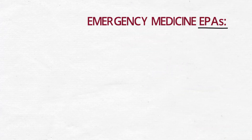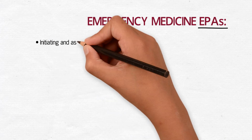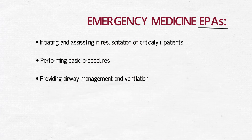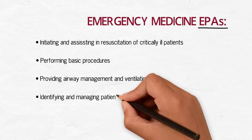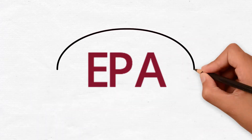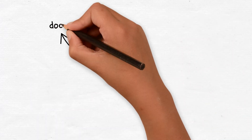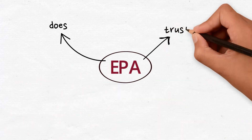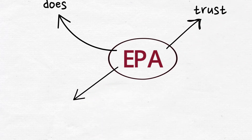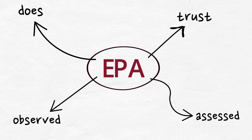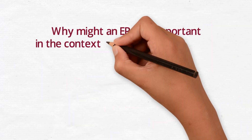These are some EPAs for emergency medicine: initiating and assisting in resuscitation of critically ill patients; performing basic procedures; providing airway management and ventilation; identifying and managing patients with emergency medical and surgical conditions. Each EPA is a unit of work and outlines something an emergency physician actually does. You could also imagine your resident being trusted to function independently for each of those activities.